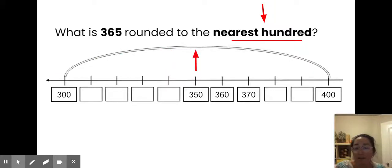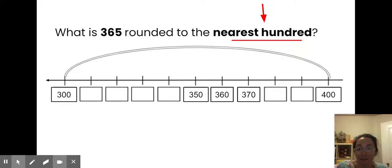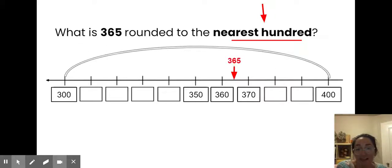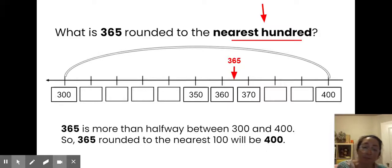If my number is halfway up the hill or more — meaning that digit I'm looking at is a five, six, seven, eight, or nine — then it's going to keep rolling up to the next hundred. 365 is somewhere between 360 and 370, right in the middle of the two, and it's farther than halfway on this number line. That means it's going to roll up to the next hundred. 365 is more than halfway between 300 and 400, so 365 rounded to the nearest hundred will be 400.